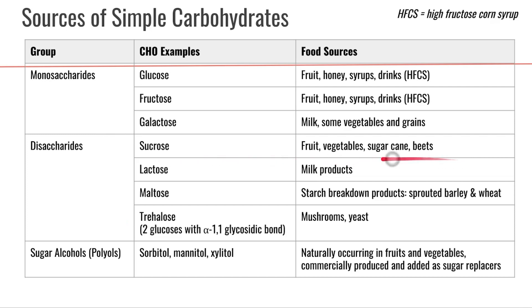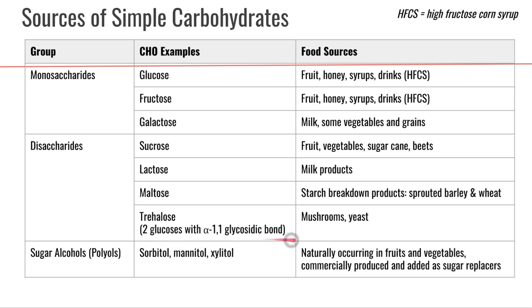Now let's look at where we get disaccharides. Sucrose comes primarily from fruits, vegetables, sugarcane, and beets — the sugarcane and beets are the initial source used to make sucrose, which is then added to other compounds, so we're not eating a lot of direct sugarcane or beets but those are the sources used to make table sugar. Lactose comes from milk products — remember lactose is a disaccharide of glucose and galactose. Maltose is a product from starch breakdown — a disaccharide of two glucose monomers — and we get it from starch breakdowns like sprouted barley and wheat. Trehalose is two glucose units bound together with an alpha-1,1 glycosidic bond, and we get that from mushrooms and yeast.